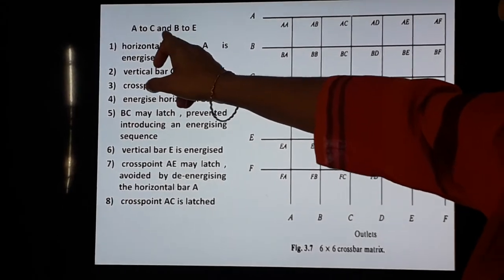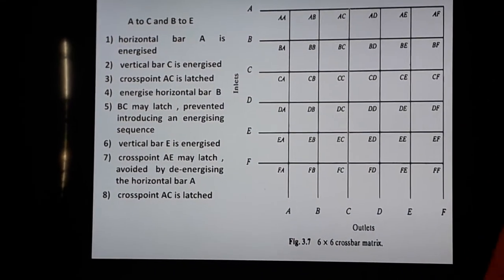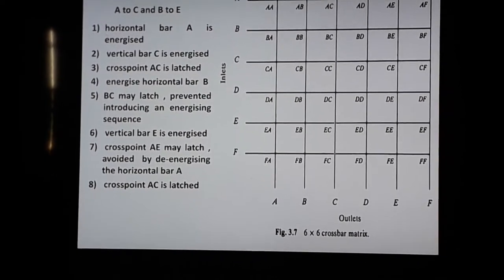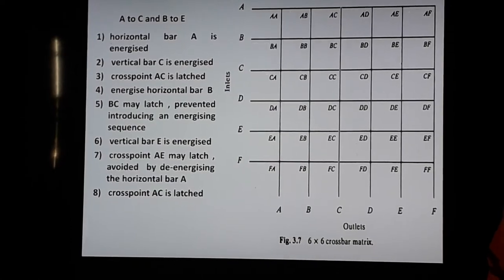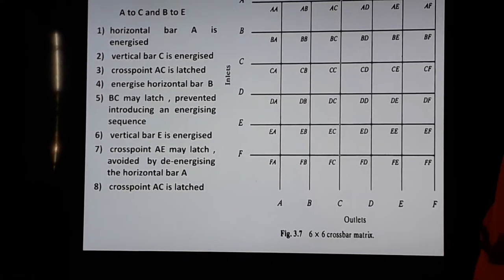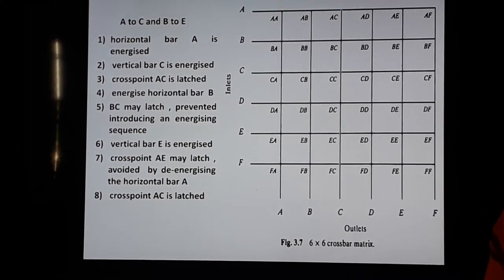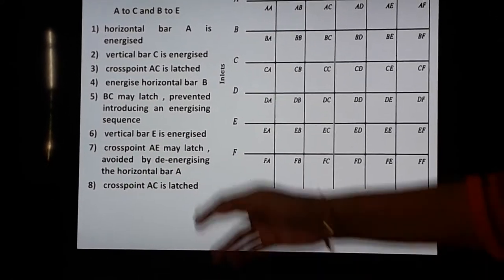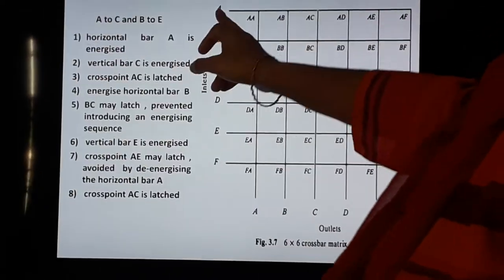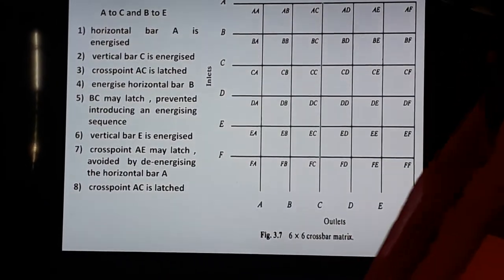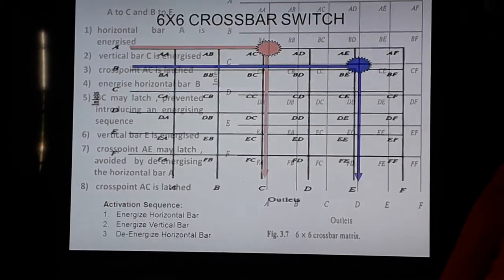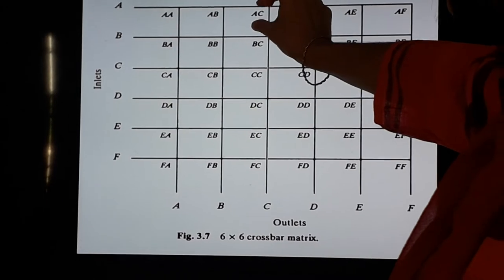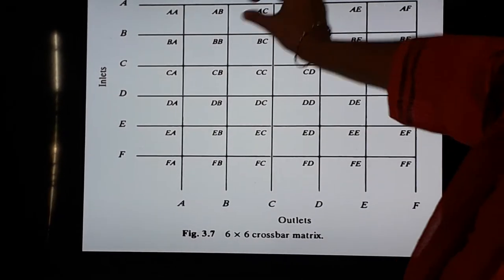So what will be the various steps for this communication — A to C and B to E? As we have already seen in the earlier class for the 3 by 3 crossbar matrix, for a contact point to come close, the first step is the horizontal bar needs to be energized first, then the vertical bar. In this case, for the communication between A and C, horizontal bar A is energized first and then vertical bar C is energized.